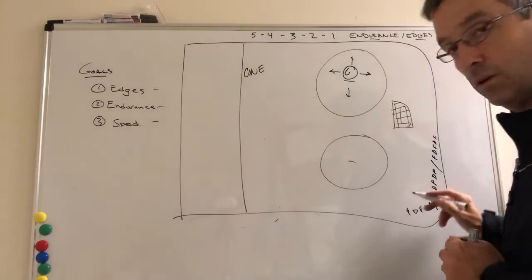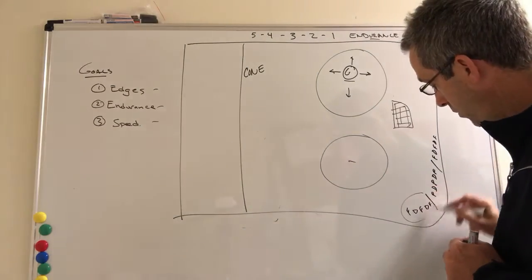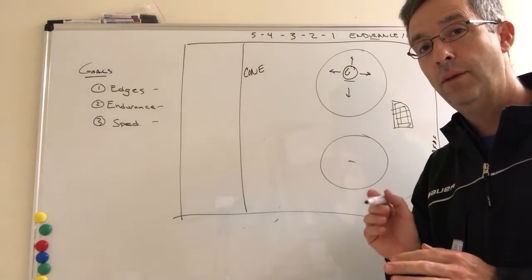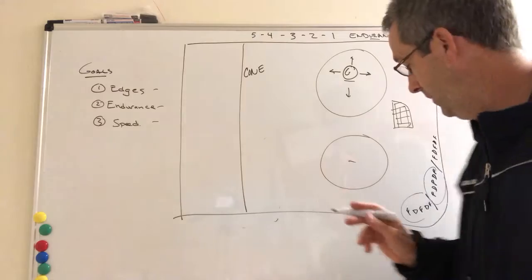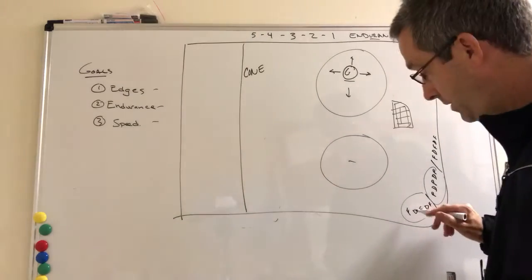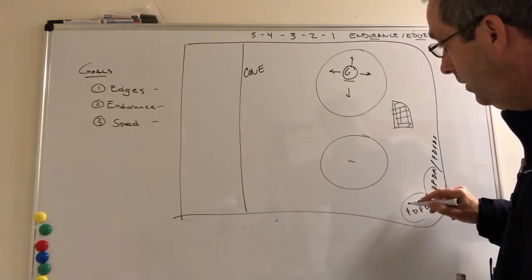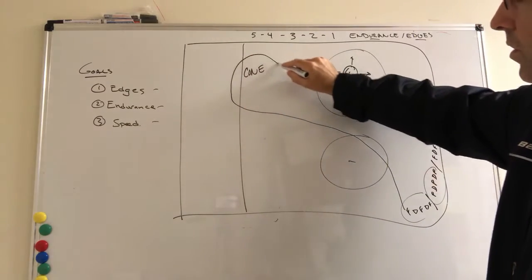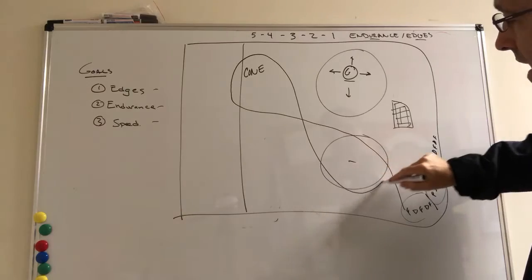We're going to divide up into two or three groups of four or five players depending on how many people we have in practice. We're going to start with these four players here. On the whistle they're going to go hard around here, come out around the cone that's out here, come hard around here and then back.